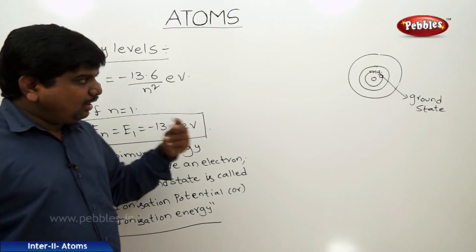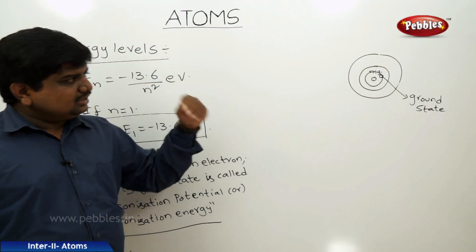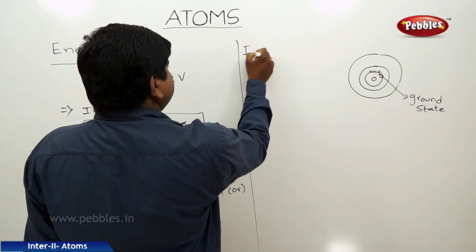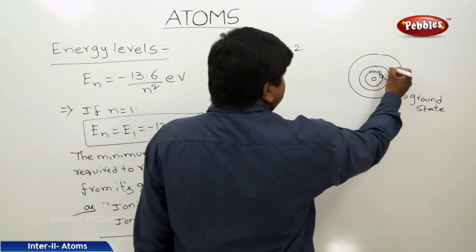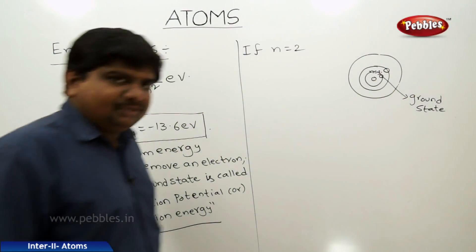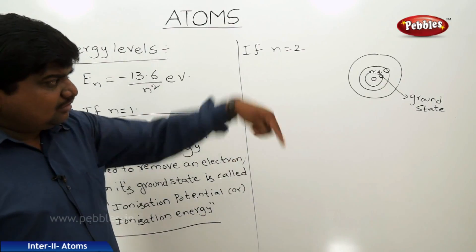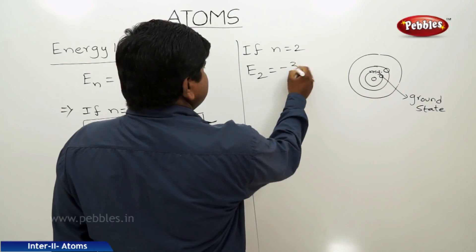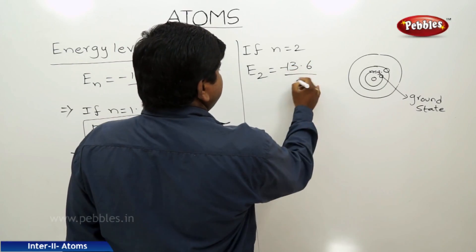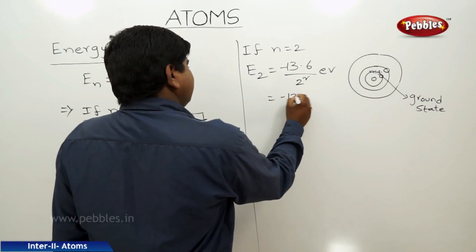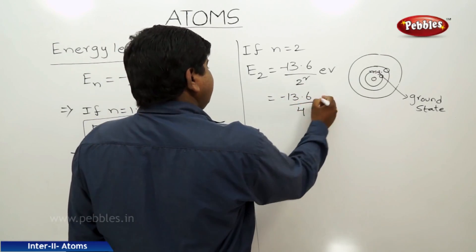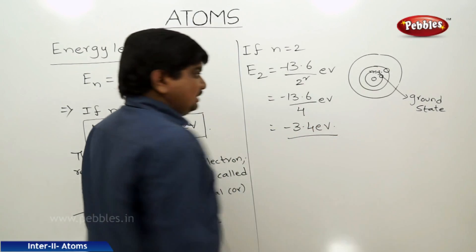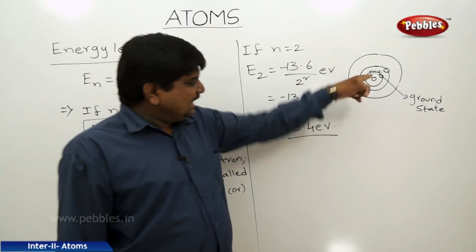We will discuss the energy required to remove an electron in the preceding energy levels. If n is equal to 2, that means an electron is in the second energy level. E2 is equal to minus 13.6 divided by 2 squared eV, which is minus 13.6 over 4 eV, giving a value of minus 3.4 eV. That is the energy of the electron in the second energy level.